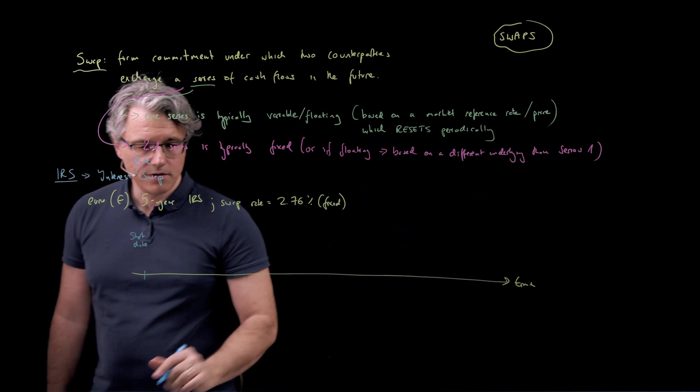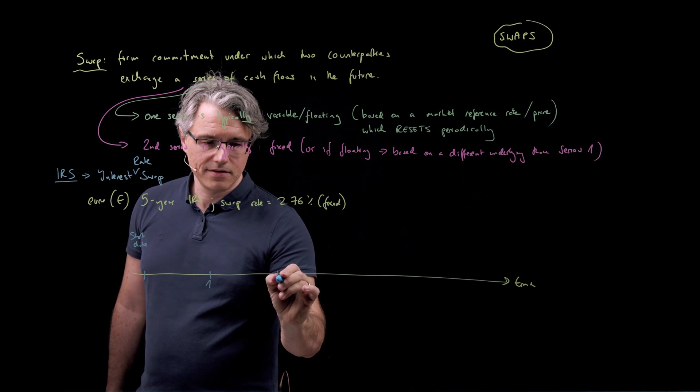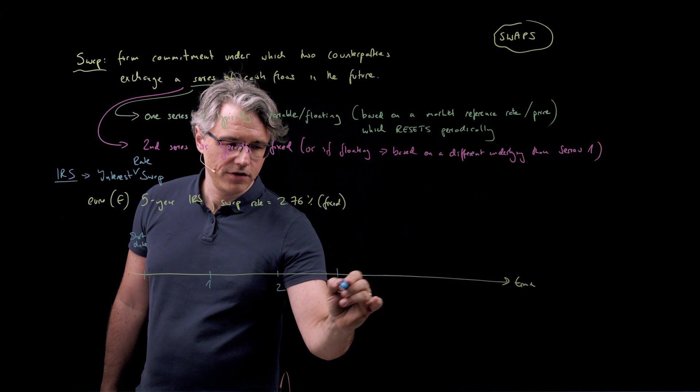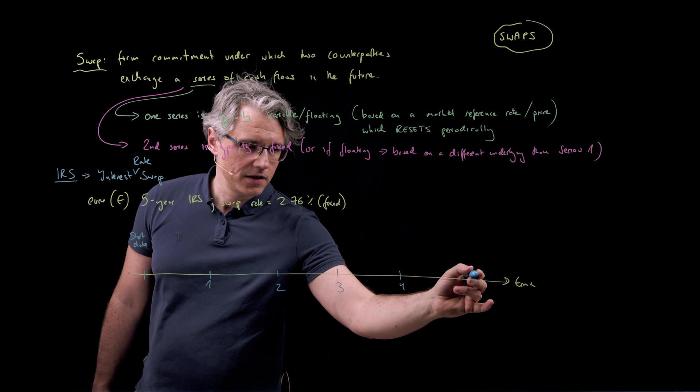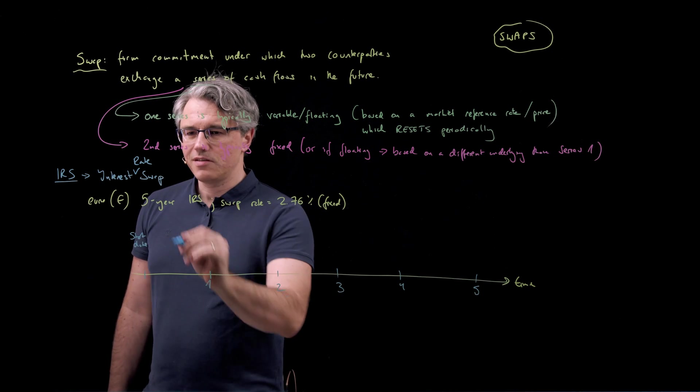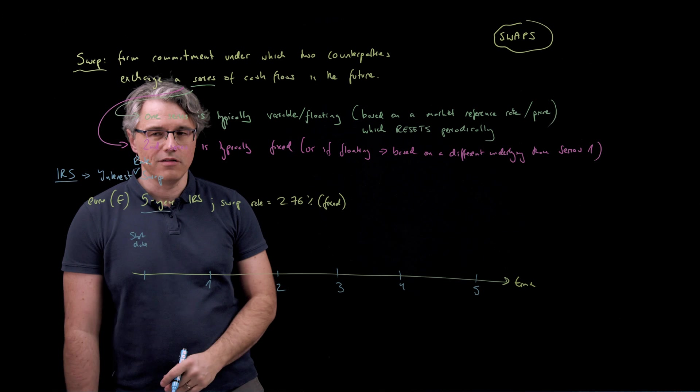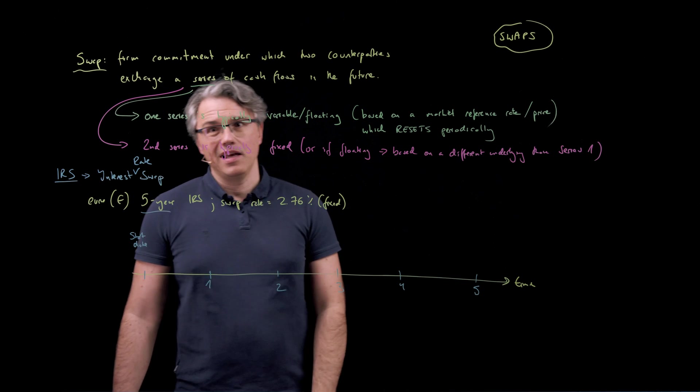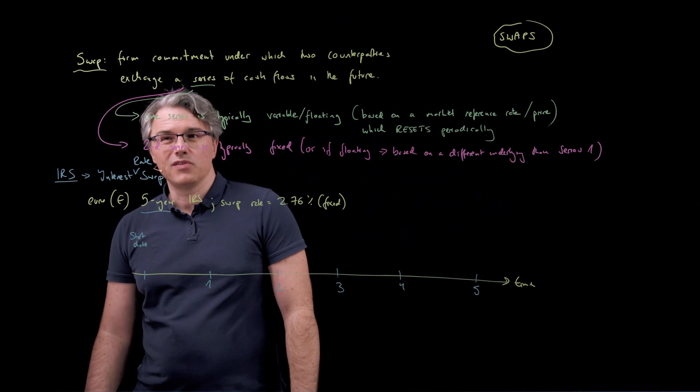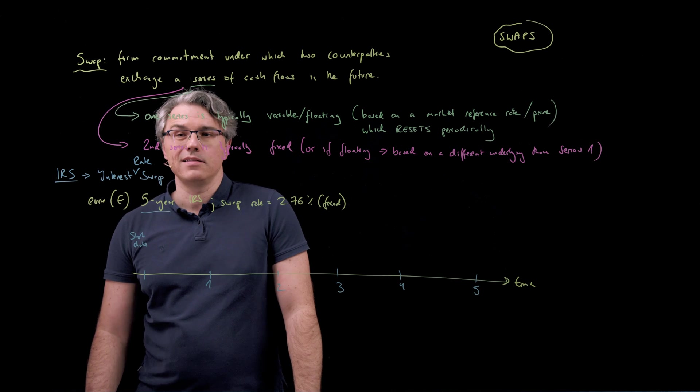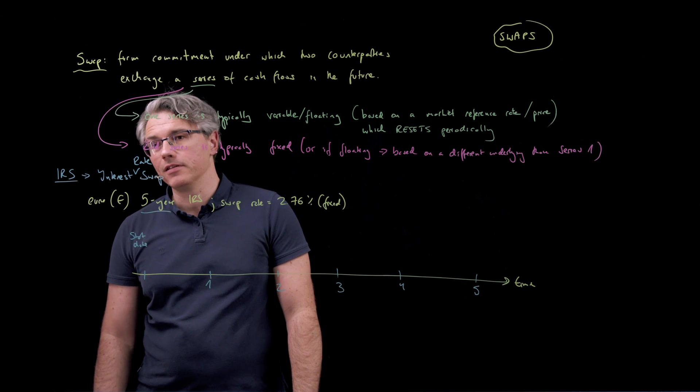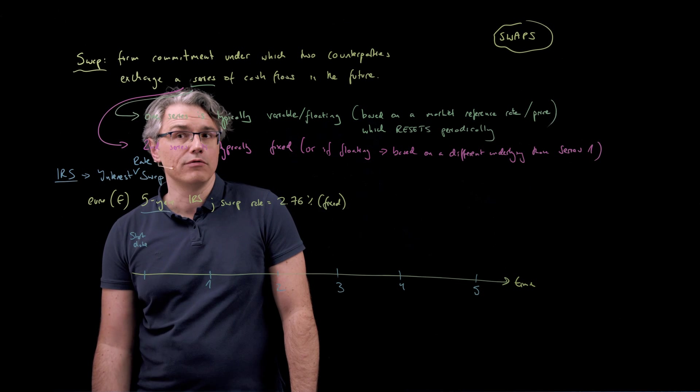And we're going to have the first settlement, second settlement, third settlement, fourth settlement, and fifth settlement. Because it's a five-year swap, I've drawn five years I guess, and I'm assuming settlement happens once a year. Although in reality, these swaps typically settle more frequently, like semi-annually or even quarterly.